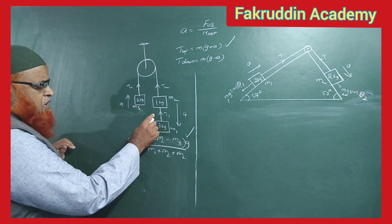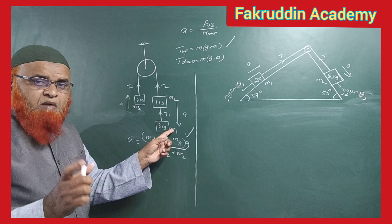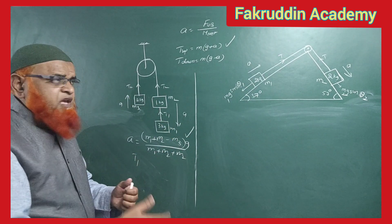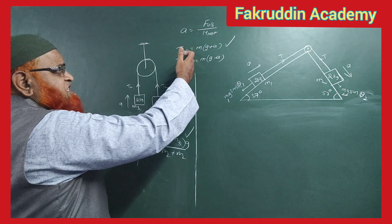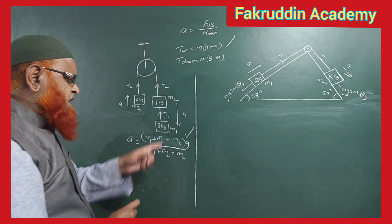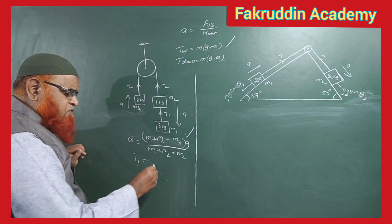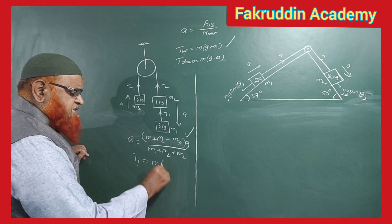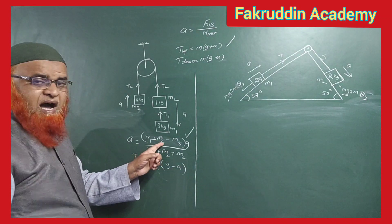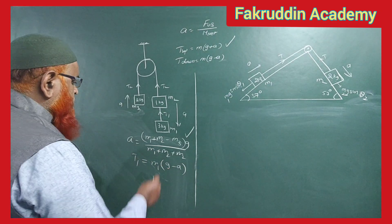To find tension T1 for block m1 which is coming downwards, since it's moving downward the formula gives T1 = m1·(g−a). We already obtained the acceleration, so we just substitute it here and get the answer.